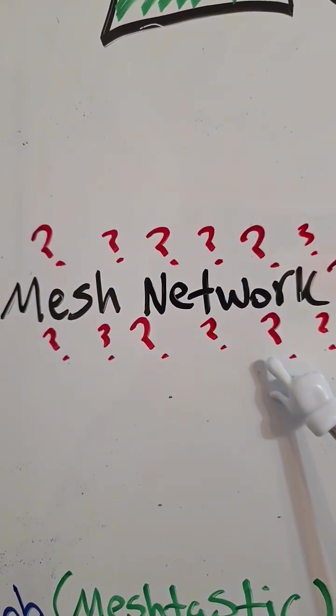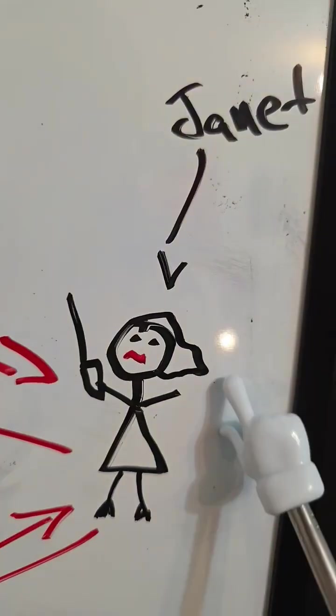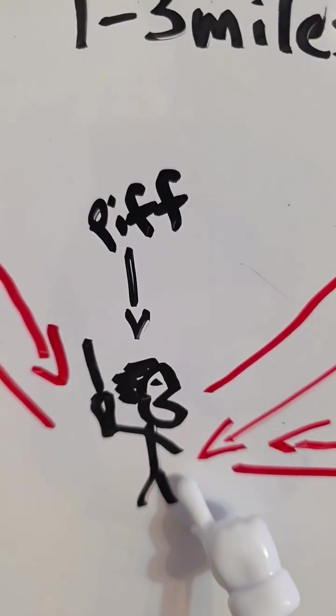But what the hell do we mean by mesh network? The Meshtastic LoRa network is peer-to-peer. This is Janet. This is Omar. This is Piff.